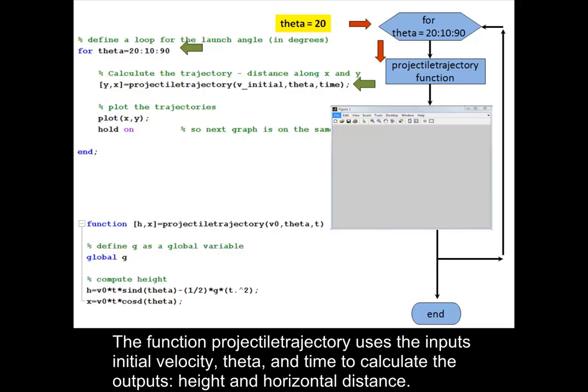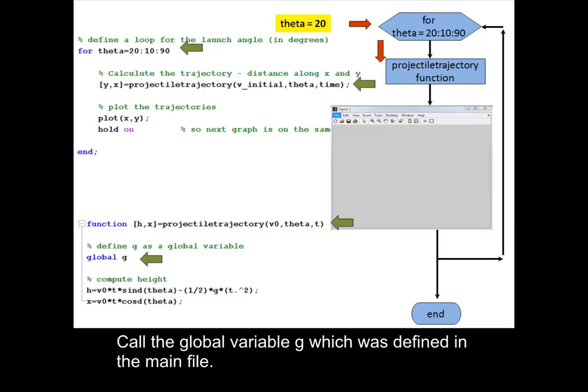The function projectile trajectory uses the inputs initial velocity, theta, and time to calculate the outputs height and horizontal distance. Call the global variable g, which was defined in the main file.